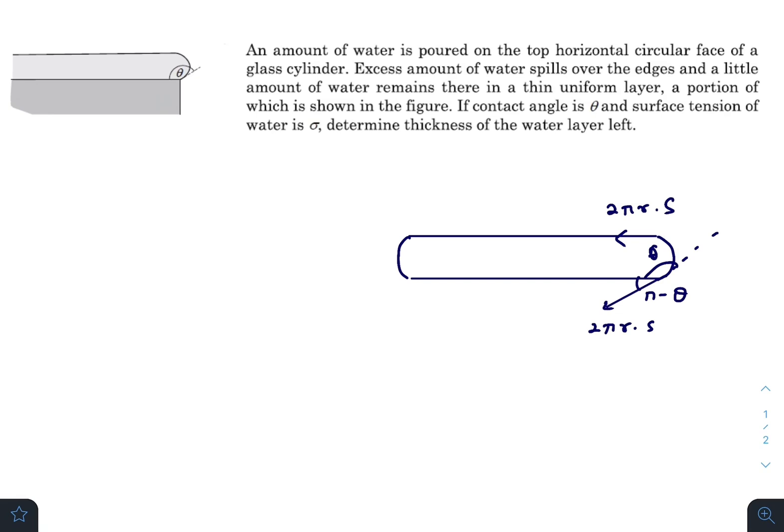So the net force in the left direction is 2πrs plus 2πrs times cos(π minus theta). And this force is balanced by the force applied by the average pressure which is acting towards right. If I consider this height h, which is the actual required variable, it will be ρgh/2, that is the average pressure times the projected area, which will be 2πr times h.